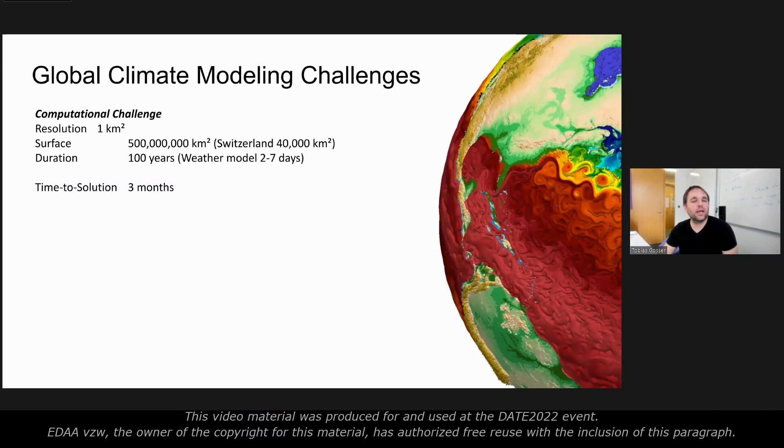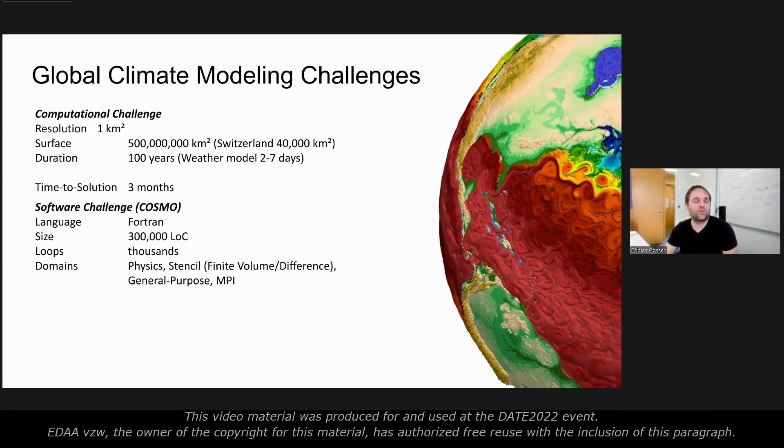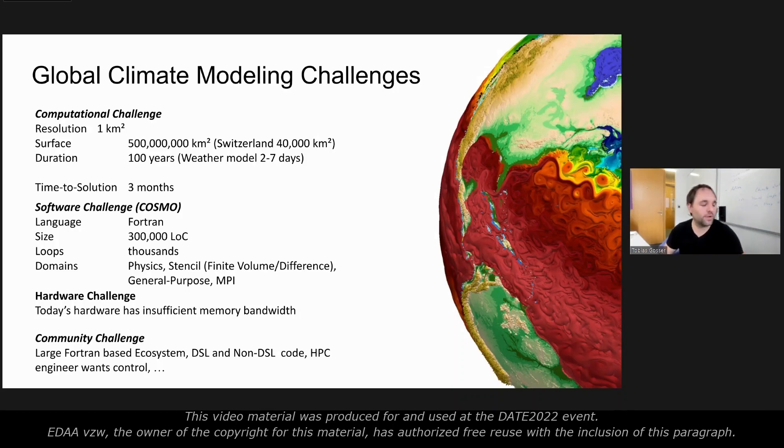Weather modeling is interesting and climate modeling is even more challenging. Today we have a resolution of one square kilometer. We have 500 million square kilometers on Earth to cover, and we want to simulate for the next 100 years maybe. We try to reach a time-to-solution of a couple of months, and that is the computational challenge. In addition, the community mostly uses Fortran—300,000 lines of code and thousands of loops. It's a very large scale software project that needs to be accelerated to get reliable climate models. Today's CPU hardware, maybe even GPU hardware, is really insufficient in terms of memory bandwidth to accelerate these codes.